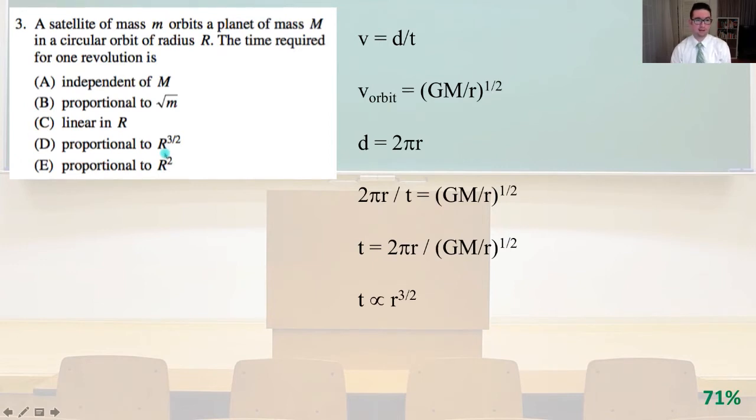Number three. A satellite of mass m orbits a planet of mass M in a circular orbit of radius r. The time required for one revolution is... We know velocity equals distance over time.